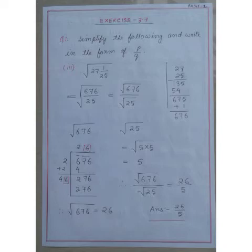Now, we shall find the square root of 676 and 25 separately. Following the process, I have got that square root of 676 is 26 and square root of 25 is 5.